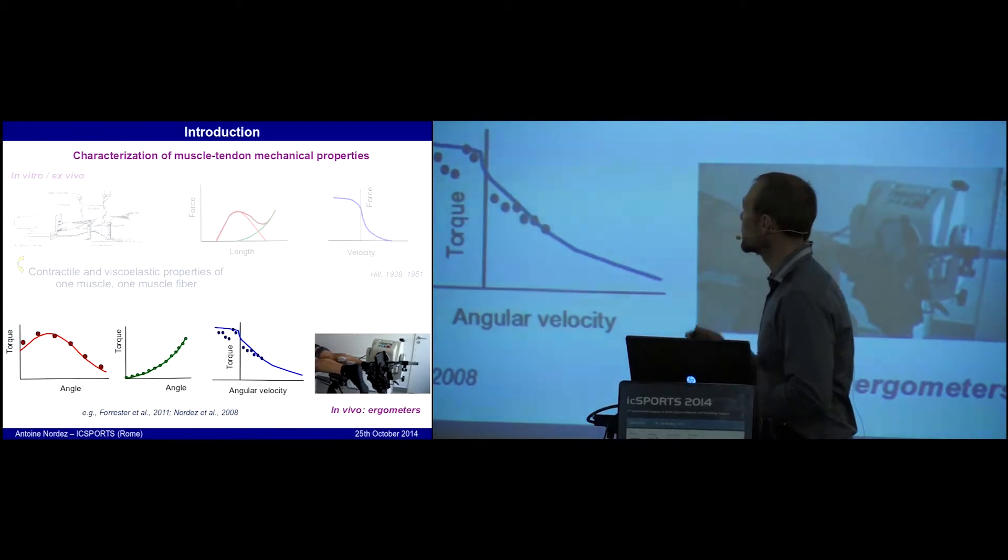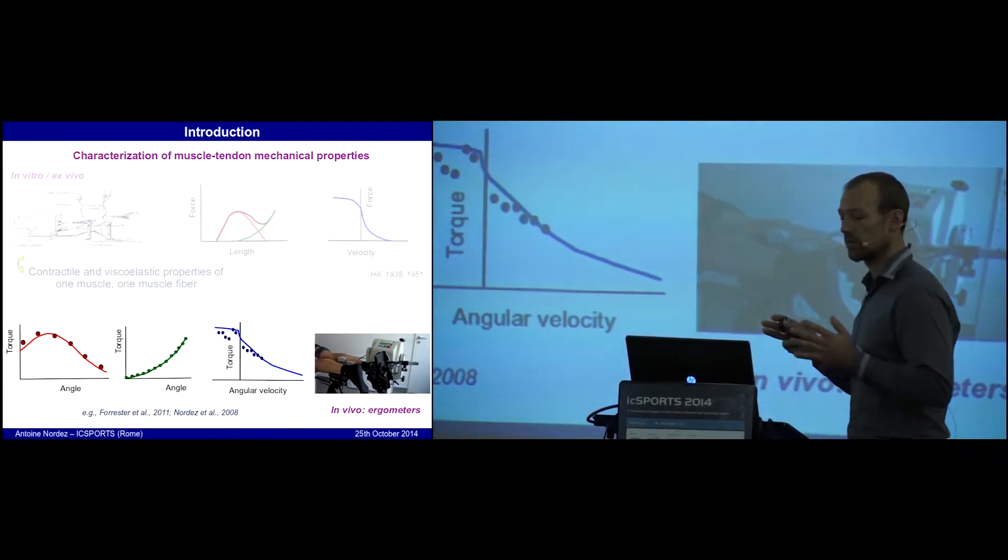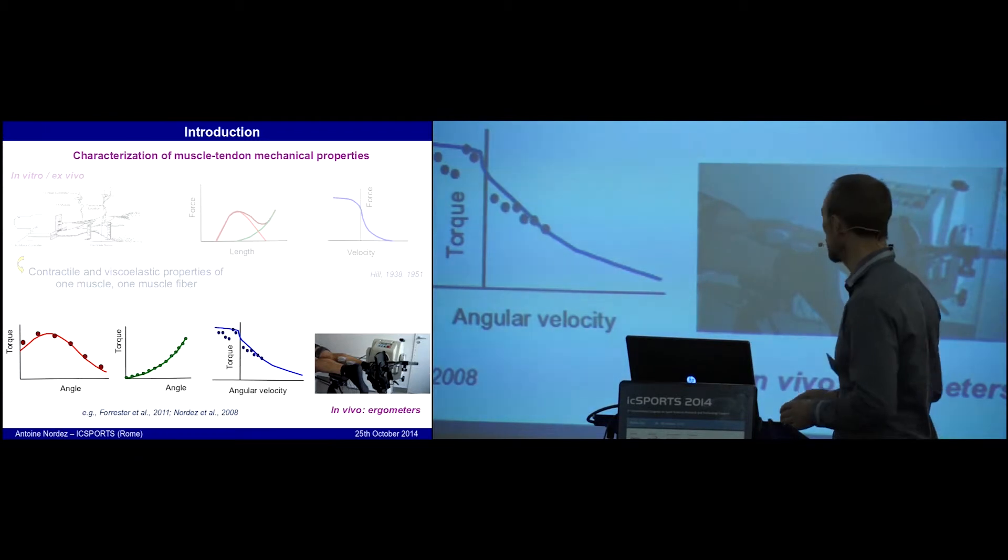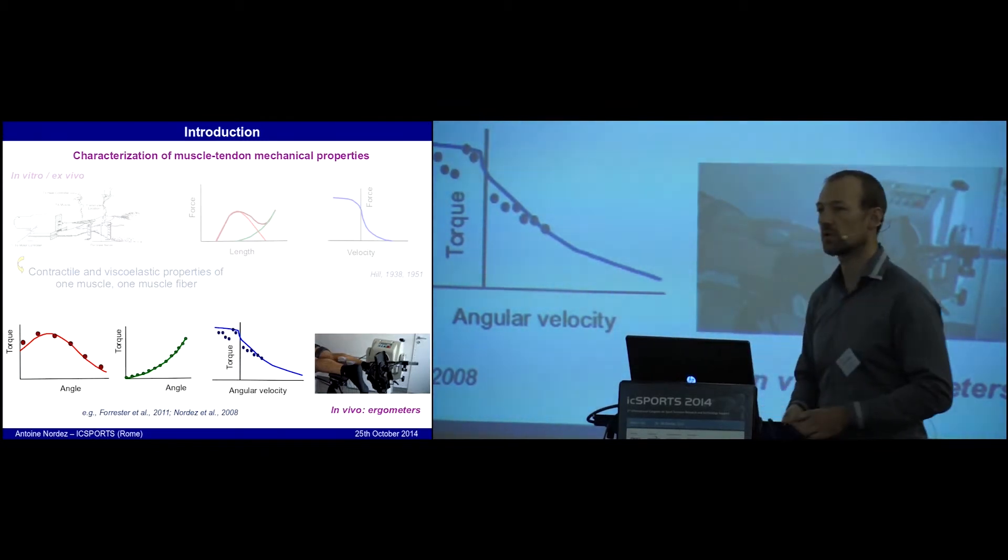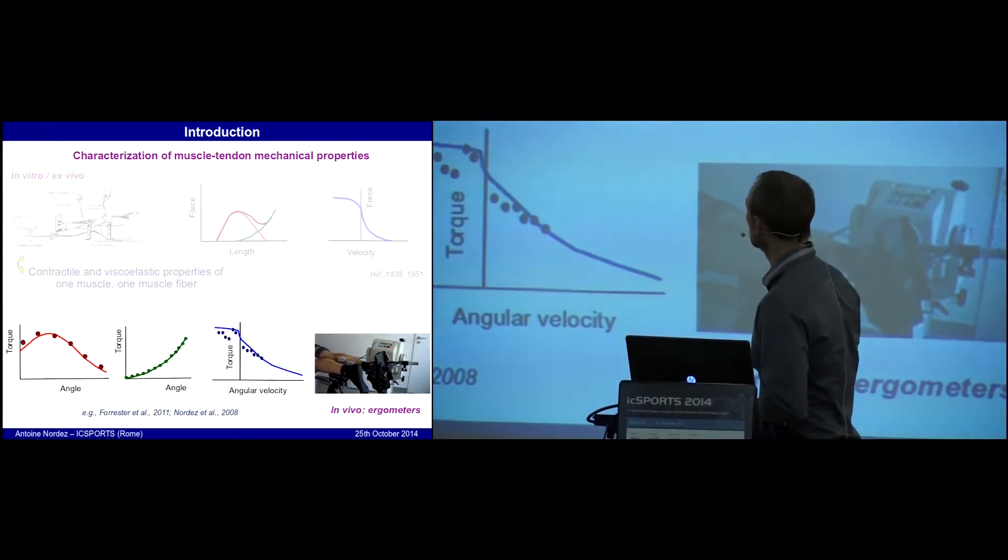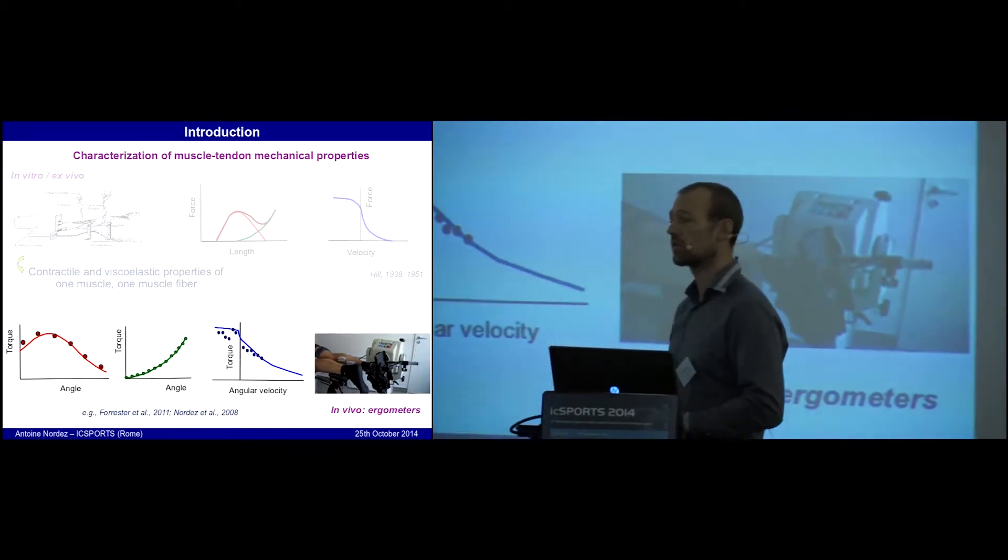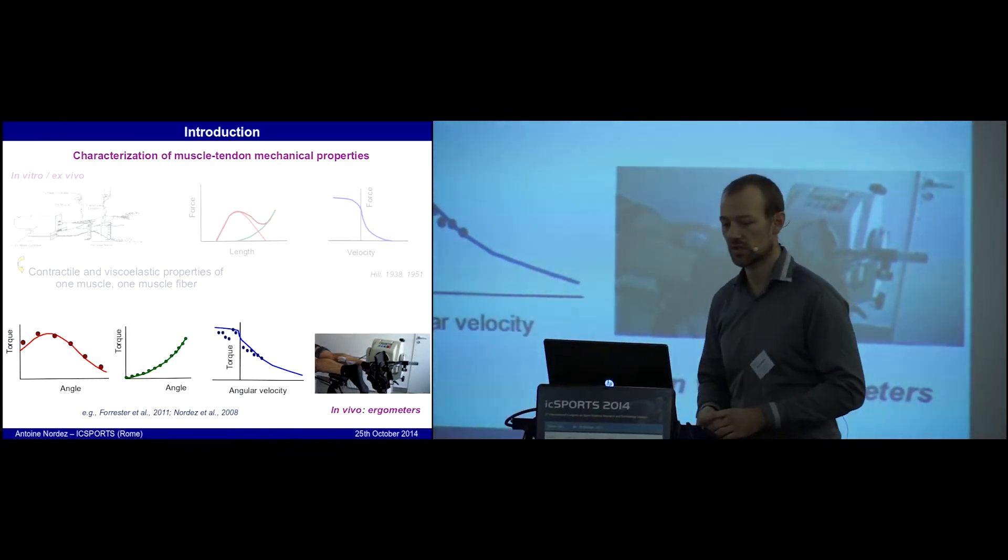That's why we need methods to analyze muscle properties in vivo, and for that purpose we can use ergometers. Ergometers are well used to obtain the torque-angle relationship in active and passive conditions, and also the torque-velocity relationship. These relationships are classically considered analogous to the force-length and force-velocity relationships.